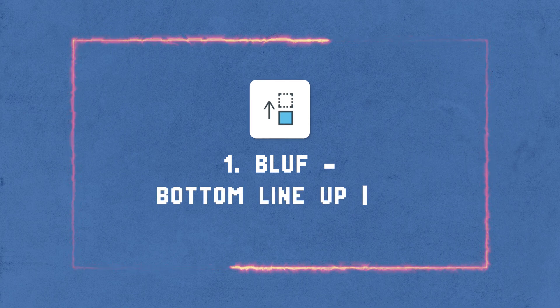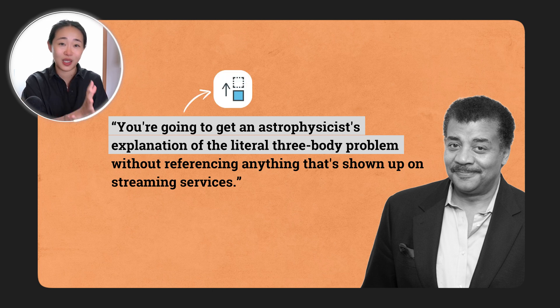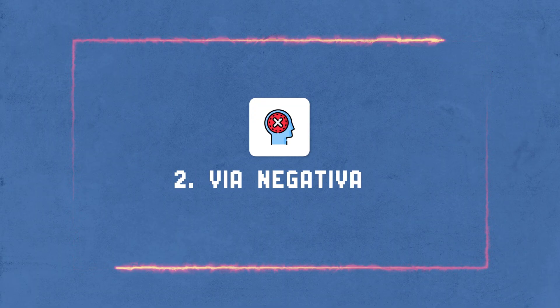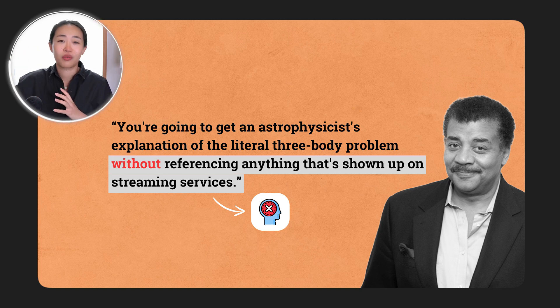Straight off the bat, do you notice? Number one, he used one of my favorite frameworks: bottom line up first. He's telling us what he's going to do — talk about the three body problem from the astrophysicist's point of view. Then he uses the next framework, which is also a crowd favorite: via negativa. He talks about what he is not going to do, which is talk about the Netflix show. So we're already seeing two frameworks in the first ten seconds. This is about to get good.